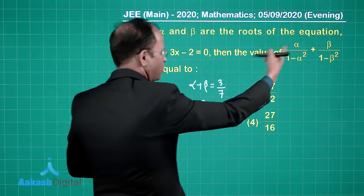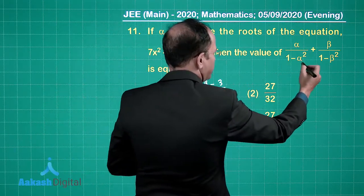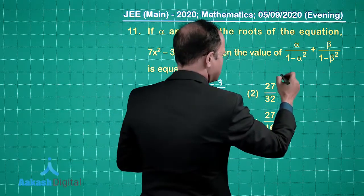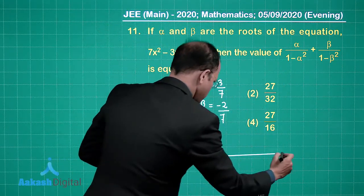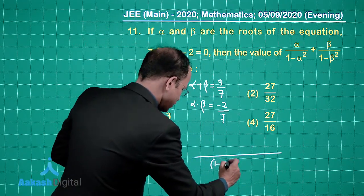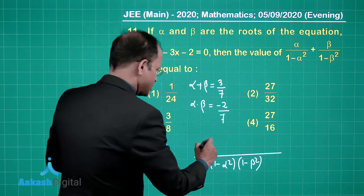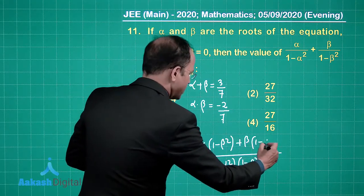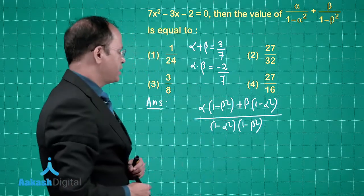The whole calculation comes when we write α/(1-α²) + β/(1-β²). We combine them over a common denominator: the numerator becomes α(1-β²) + β(1-α²), and the denominator is (1-α²)(1-β²).